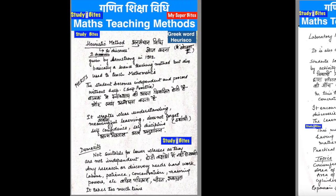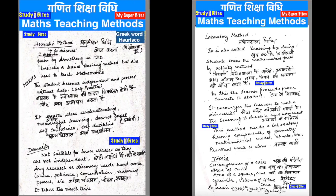So we have covered two methods: the Heuristic Method (Anusandhan Vidhi) and the Laboratory Method (Prayokshala Vidhi). Both are related to each other — when a student wants to discover independently, they need the laboratory. Both follow psychological principles of moving from known to unknown. These are foundational teaching methods.